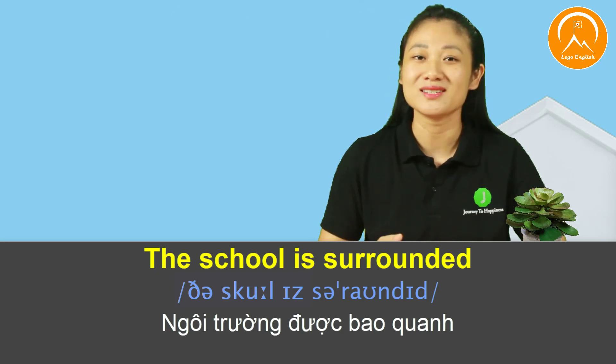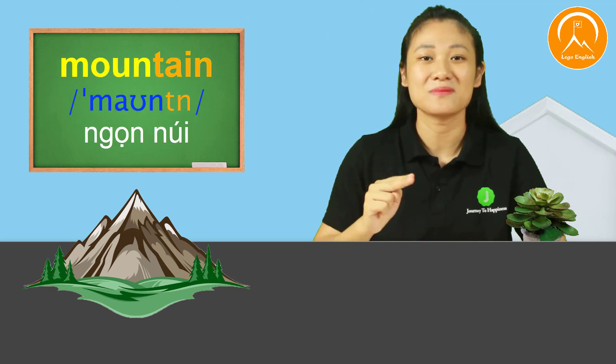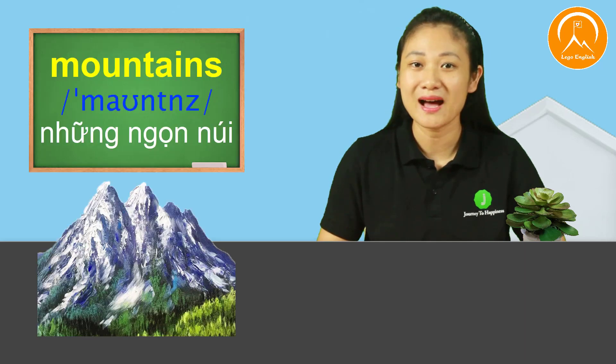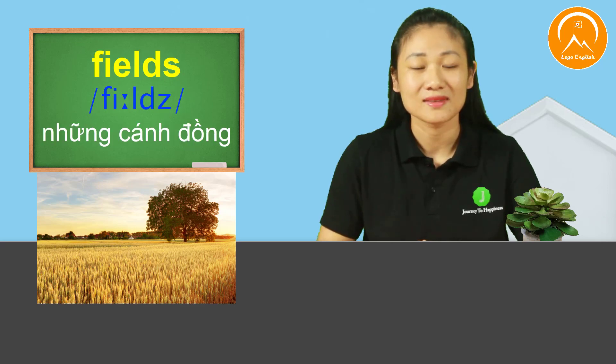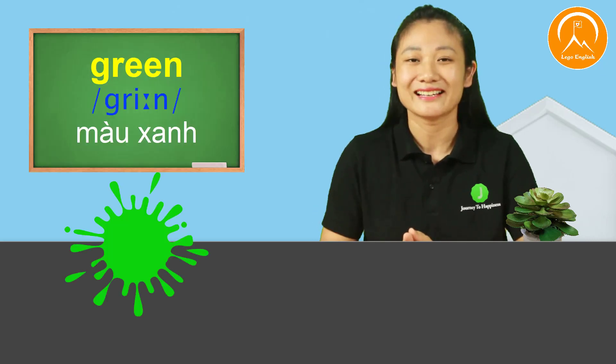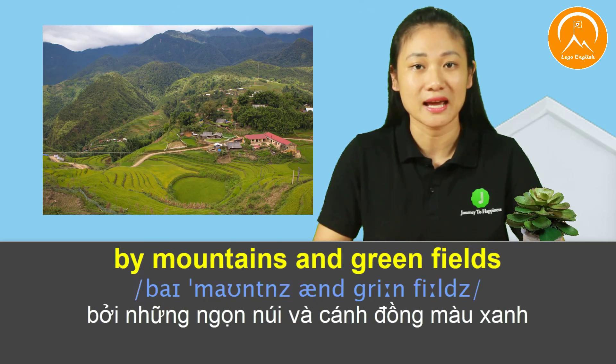The word for mountain is 'mountain.' Again. Mountain. The stress is on the first syllable. The plural form is 'mountains.' Again. Mountains. The word for field is 'field.' Again. Field. The plural is 'fields.' Again. Fields. And 'green fields' adds the word 'green.' The full sentence from the lesson: The school is surrounded by mountains and green fields.